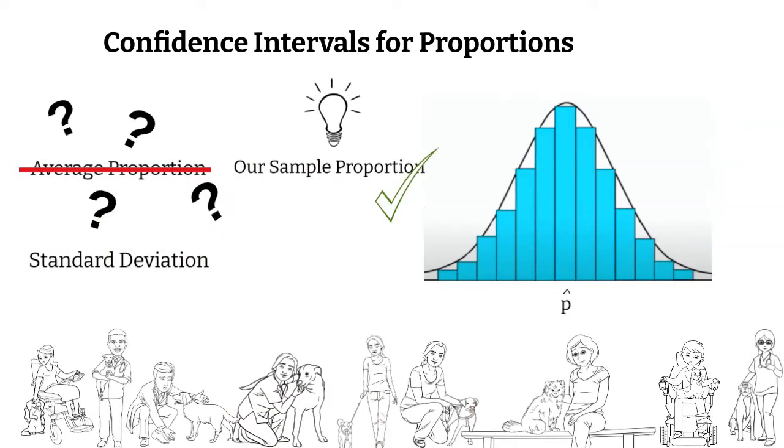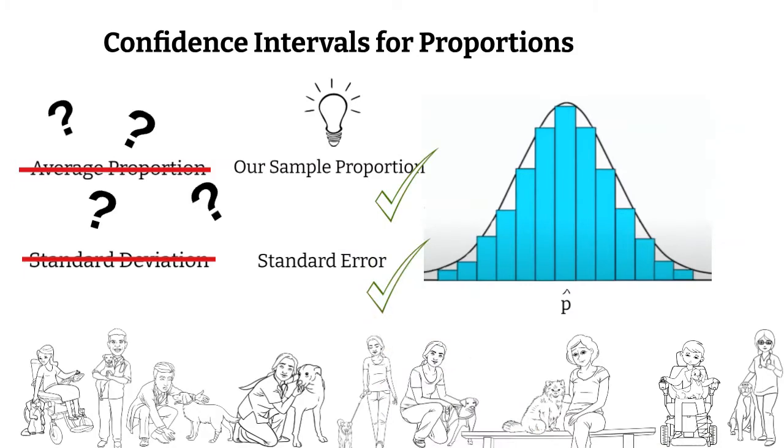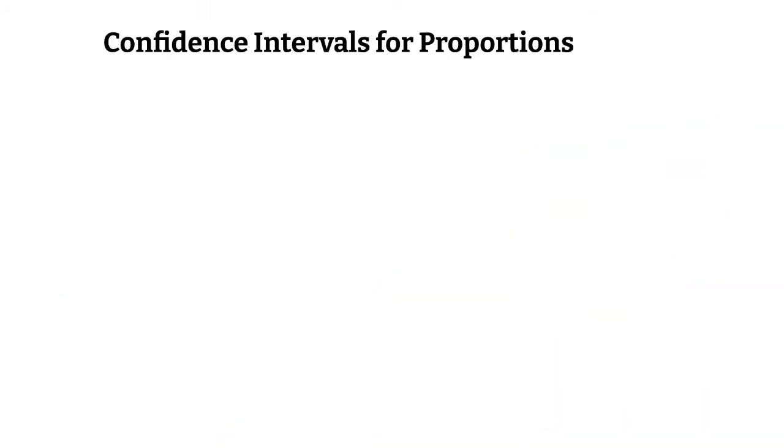Previously, the standard deviation helped us to see the spread of our data from the mean. But since the mean is not at the center of this curve, we will be using a number called the standard error instead. Okay, let's jump in and see how this all works together.